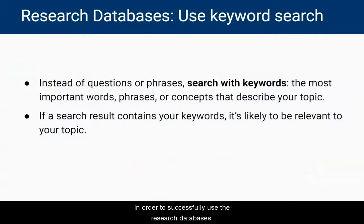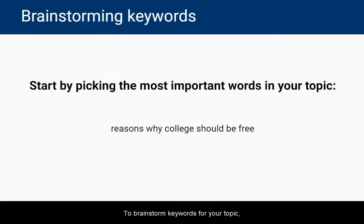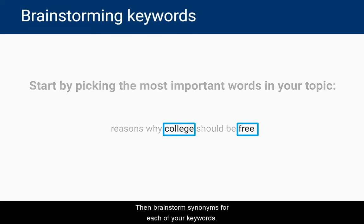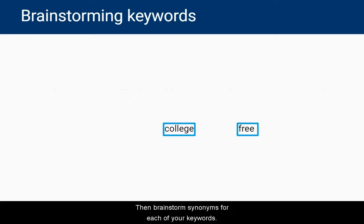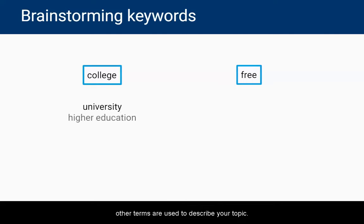In order to successfully use the research databases, you'll need to focus on finding appropriate keywords to describe your topic. To brainstorm keywords for your topic, start by picking out the most important words in your topic. Then, brainstorm synonyms for each of your keywords. You may want to do a quick Google search to see what other terms are used to describe your topic.